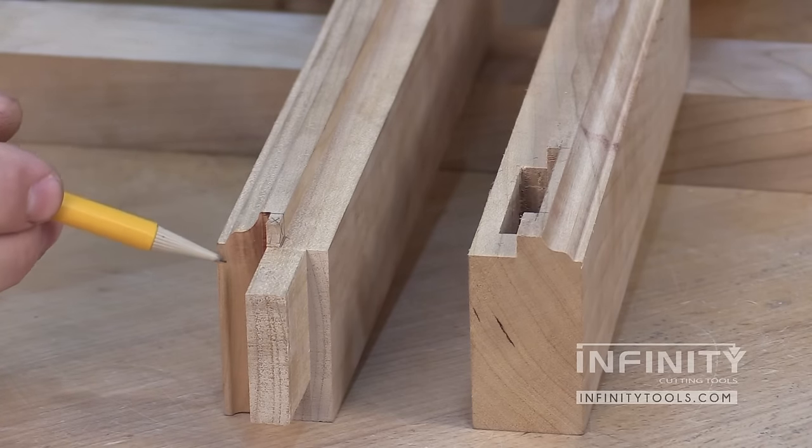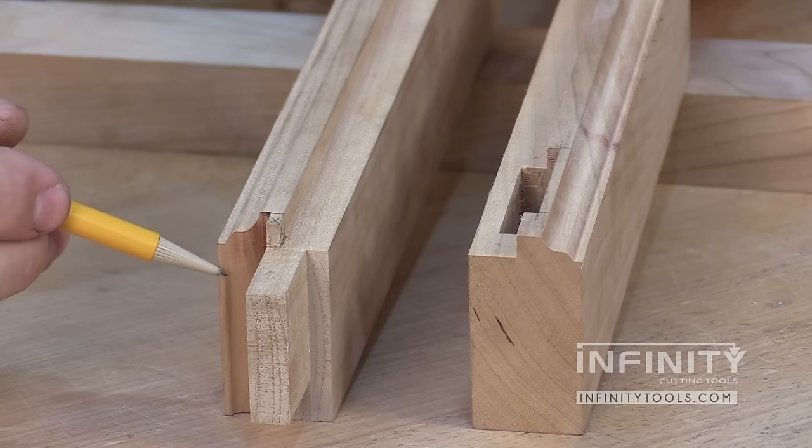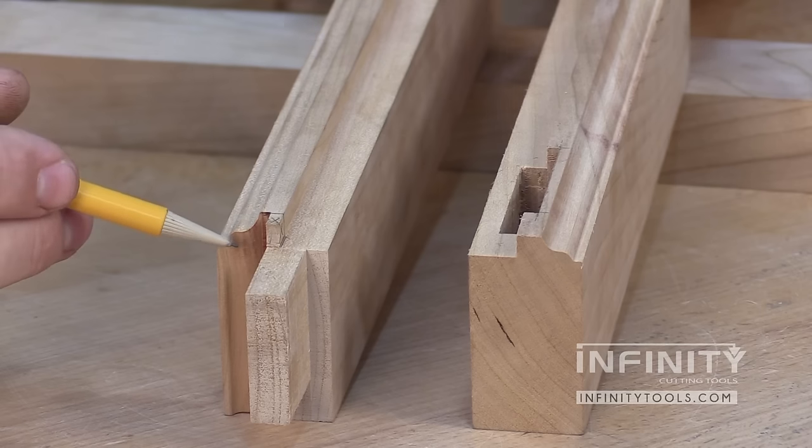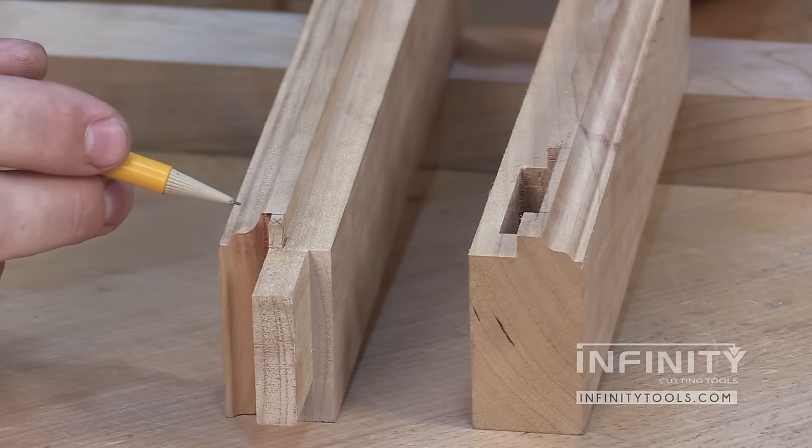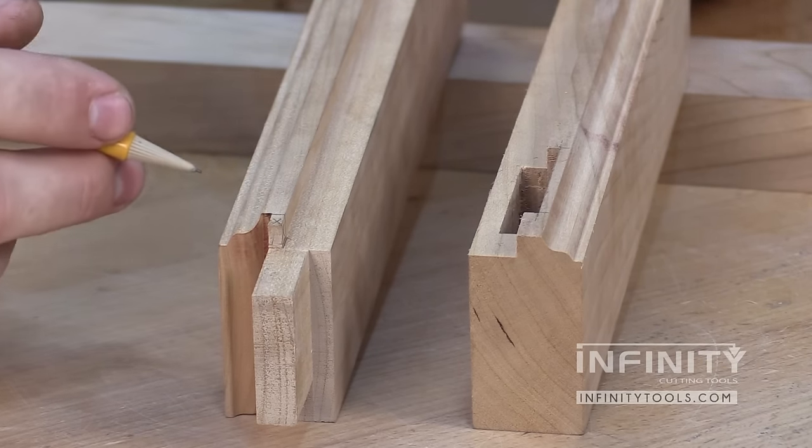We can cut our cope cut on the ends of our rails and mutton bars. And we can go ahead and profile all of our pieces using our style cutter.